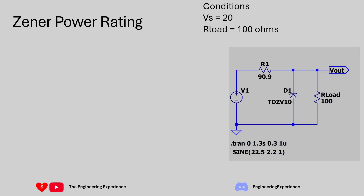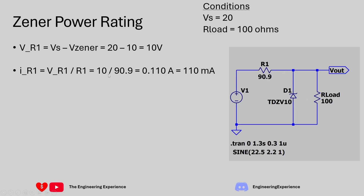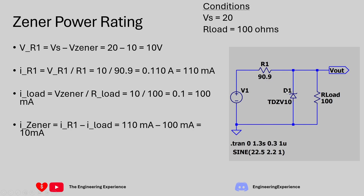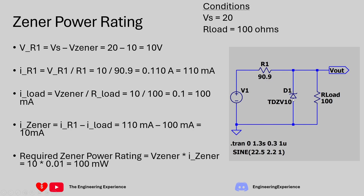For the second part of the question we need to calculate the power rating for the Zener diode. Condition 1: Vs = 20 volts, load resistor = 100 ohms, R1 = 90.9 ohms. With 10 volts across R1, the current through R1 is 10 volts divided by 90.9 ohms, giving 110 milliamps. The load current is 100 milliamps, so using Kirchhoff's current law the current through the diode is 10 milliamps. With 10 volts across the diode, the power rating for this condition is 100 milliwatts. But this is not the worst case.